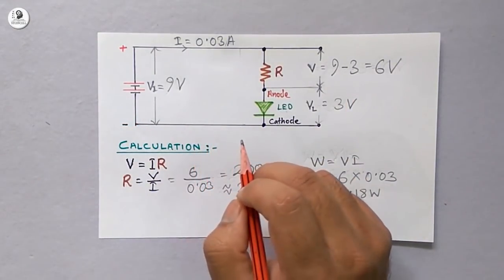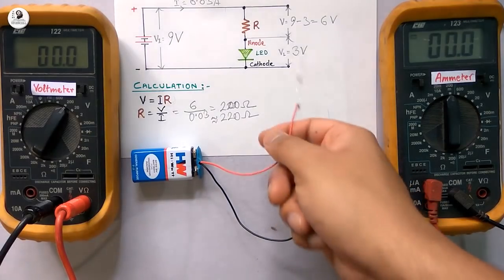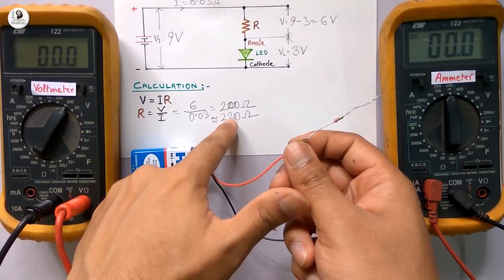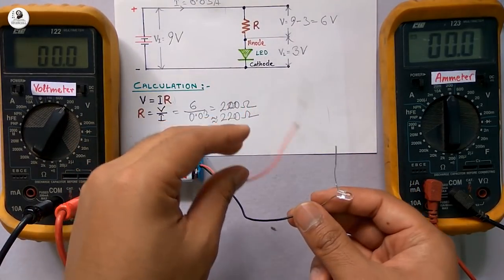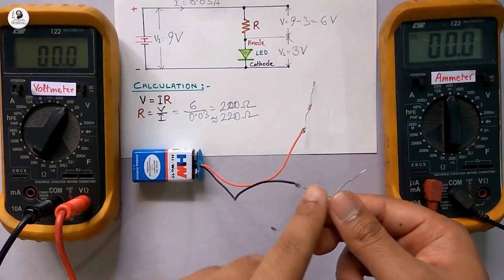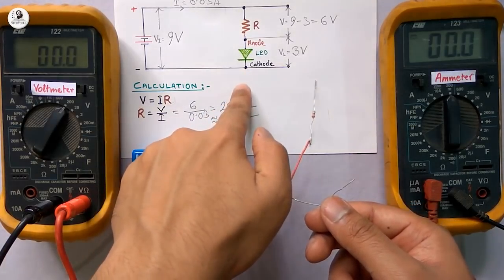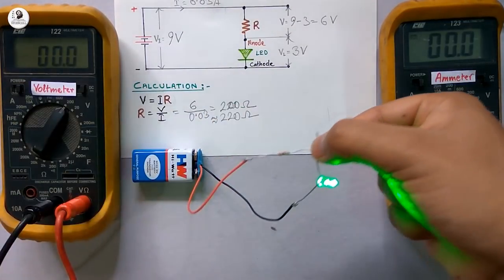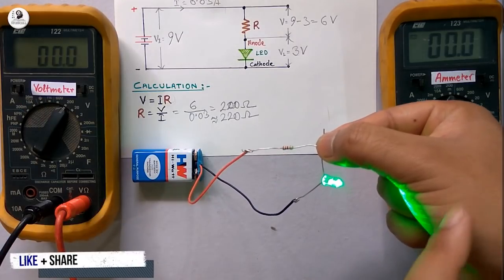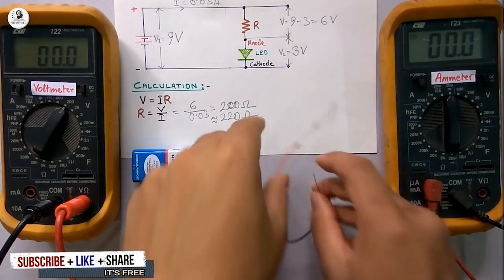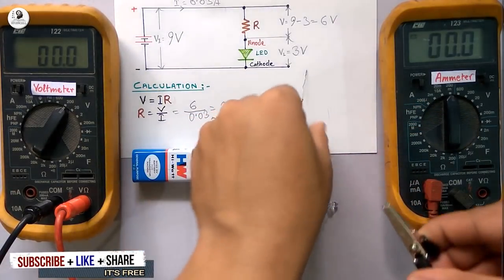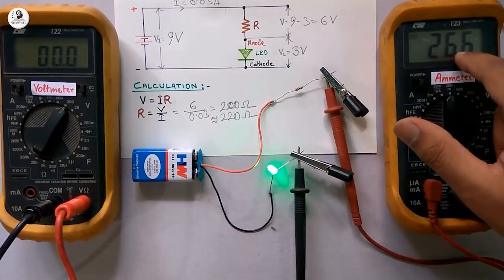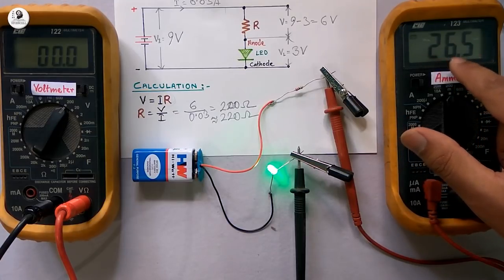Now we will build the circuit and measure the voltage and current value accordingly. Here I have connected the 220 ohm resistor with the positive terminal of the battery. As you can see, we have already calculated the resistance value, which is 220 ohm to limit the current within 30 milliampere. And I have connected the cathode of the LED with the negative terminal of the battery. As you can see, the cathode is connected with the negative terminal. Now if you connect these two, you can see the LED is glowing. We will measure the voltage and current with this voltmeter and ammeter. The ammeter is connected in series so we can measure the current, and you can see the value is 26.5 milliampere.